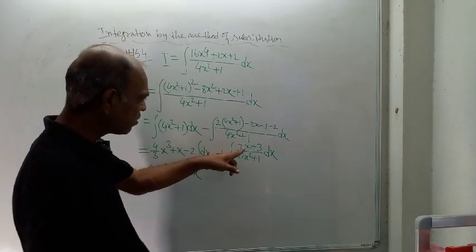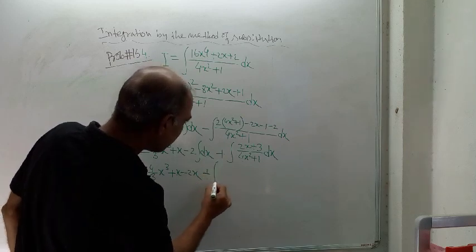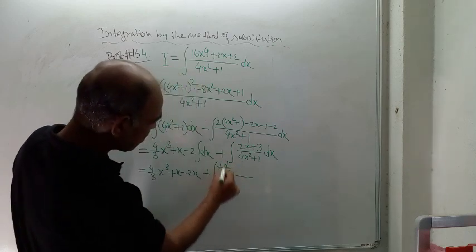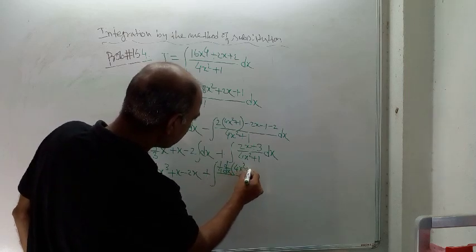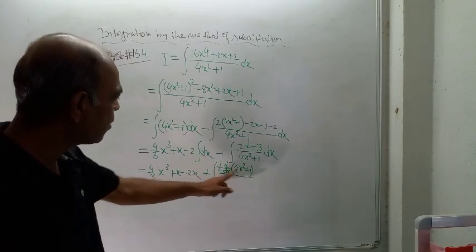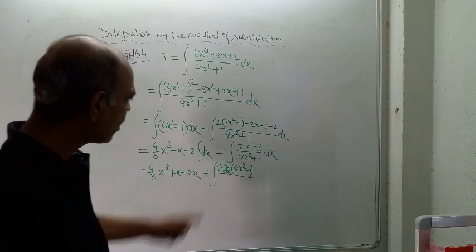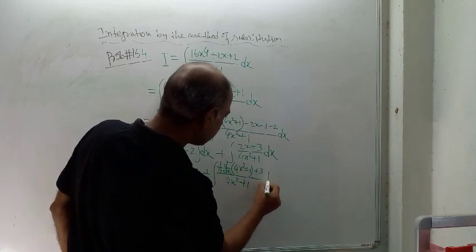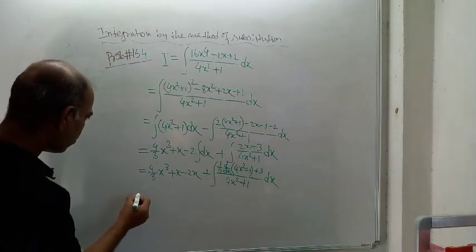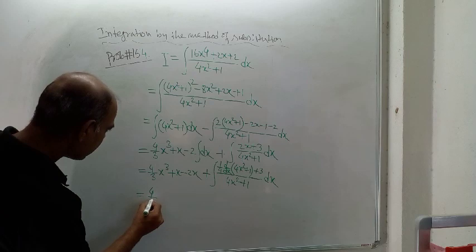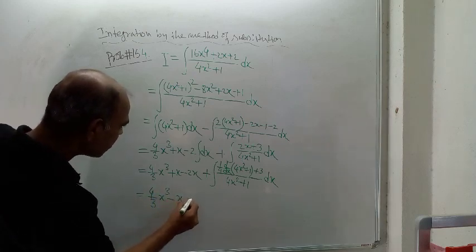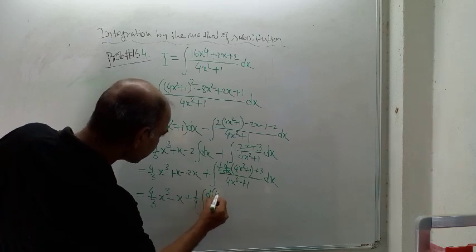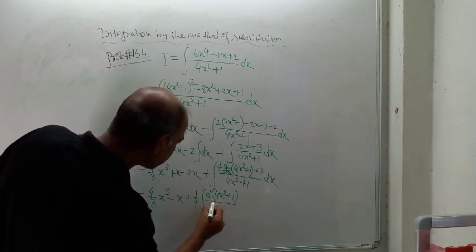And here 2x is there, so this can be written as 1/4 times d/dx of (4x² + 1). What is d/dx of (4x² + 1)? That is equal to 8x, multiplied by 1/4 gives 2x. Then plus 3 is there, so plus 3. So (4x² + 1) dx. Next line: 4/3 x³ minus x, and you are getting 1/4 times d(4x² + 1) divided by (4x² + 1).